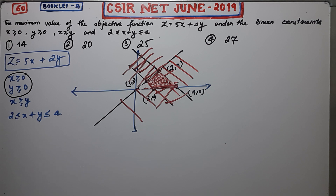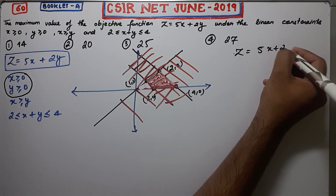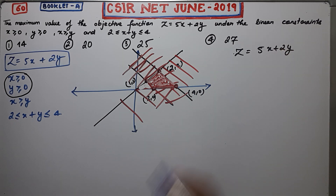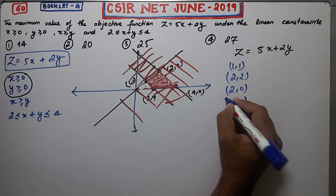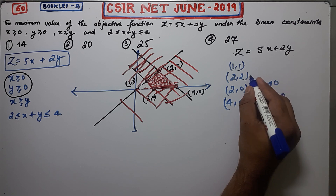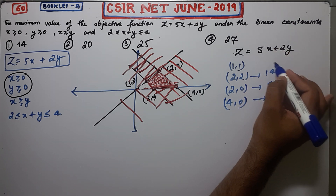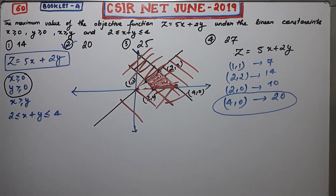That means you have to check the maximum value at only those corner points. The objective function is Z equals 5x plus 2y. The four corner points are (1, 1), (2, 2), (2, 0), and (4, 0). Placing (4, 0) gives Z = 20; (2, 0) gives Z = 10; (2, 2) gives Z = 14; and (1, 1) gives Z = 7. So the maximum value is attained at (4, 0), giving a maximum value of 20.